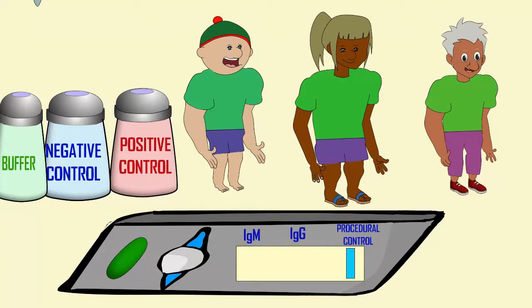It is very important to have checks in your procedure to make sure that your results are accurately displaying what they think they are. Here is what's known as a procedural control: if the test proceeds normally, say for example there's enough volume in the patient sample, then you should see a blue line turn red.